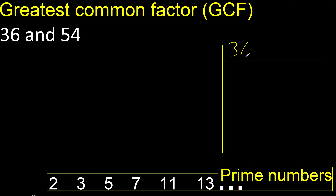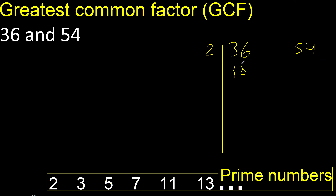Can 36 and 54 be divided by 2? Yes, therefore divide. 36 divided by 2 is 18. 54 divided by 2 is 27.